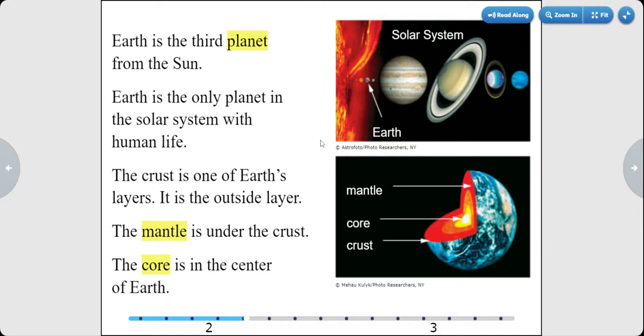Earth is the only planet in the solar system with human life. The crust is one of Earth's layers; it is the outside layer. The mantle is under the crust, and the core is in the center of Earth.